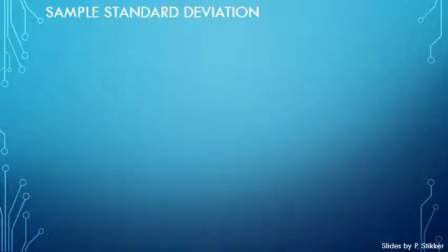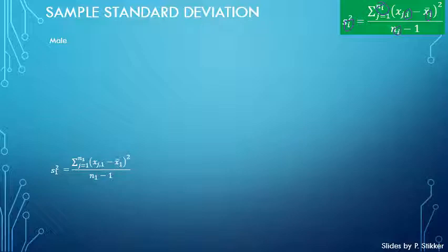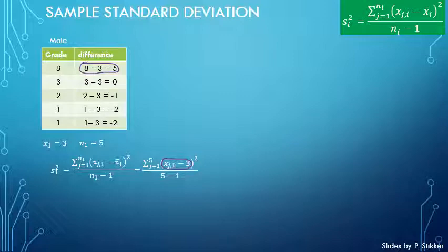To calculate the sample variance, we use the formula with the subscript 1 for the male category. We already know X-bar 1 and N1. For each score we calculate the difference from the mean of 3: 8 minus 3 equals 5, 3 minus 3 equals 0, and so on. Note that if done correctly, all these differences should add up to 0.